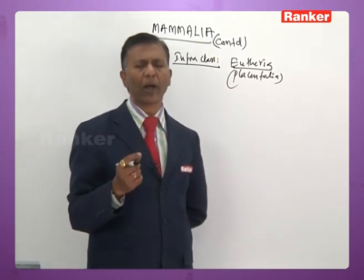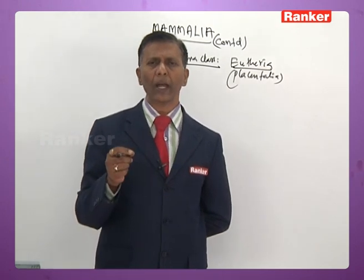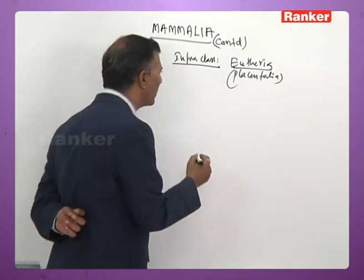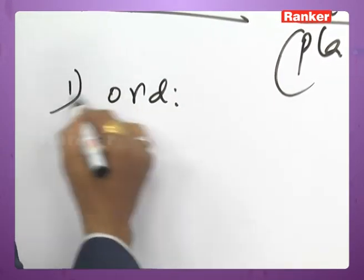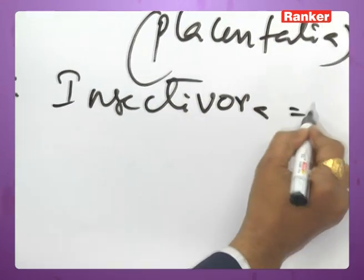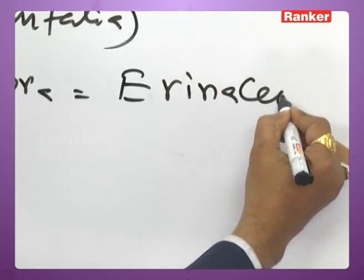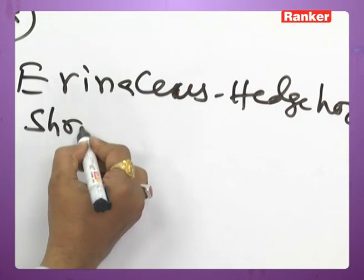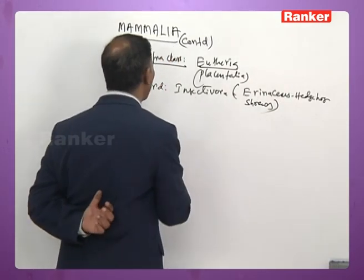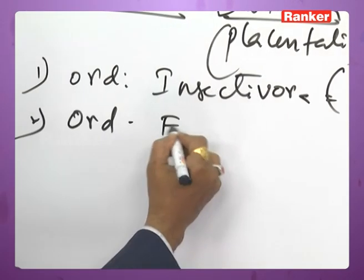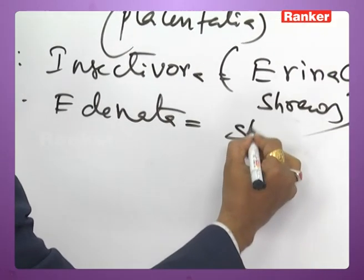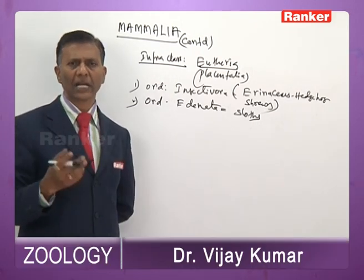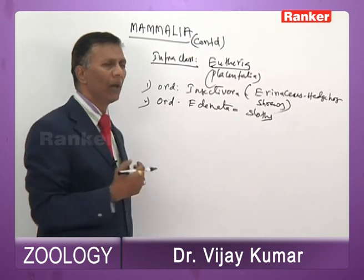Some important orders of Eutheria from an exam point of view: Order Insectivora — includes Erinaceus (hedgehog) and shrew-like mammals. Order Edentata — includes Choloepus (two-toed sloth) and Bradypus tridactylus (three-toed sloth). In Insectivora and Edentata, the testes are within the abdomen due to low metabolic rate.